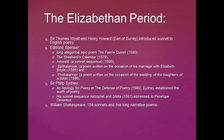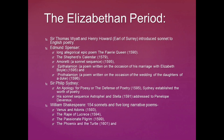William Shakespeare is a representative Elizabethan writer who wrote 154 sonnets and five long narrative poems, along with 37 plays. Venus and Adonis, The Rape of Lucrece, The Passionate Pilgrim, The Phoenix and the Turtle, and A Lover's Complaint are some of the poems written by William Shakespeare.